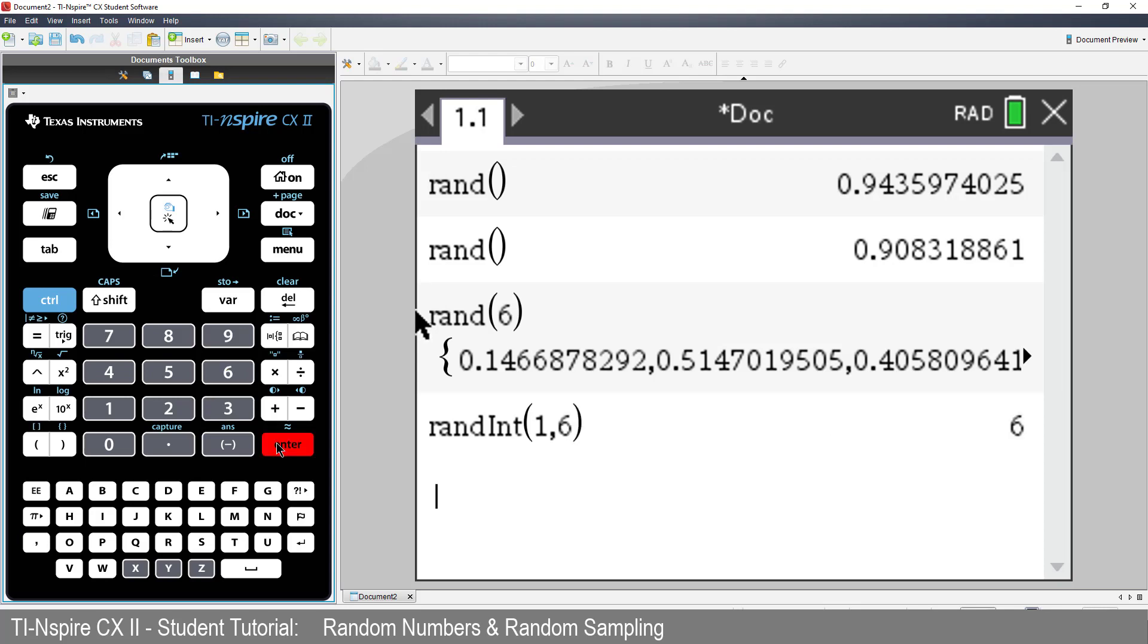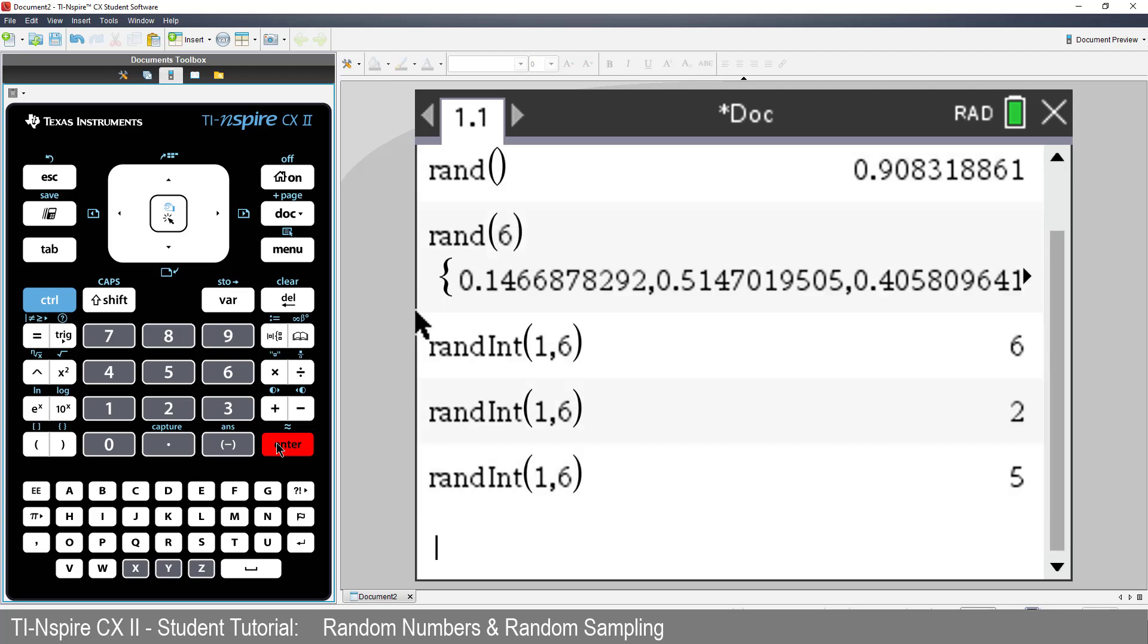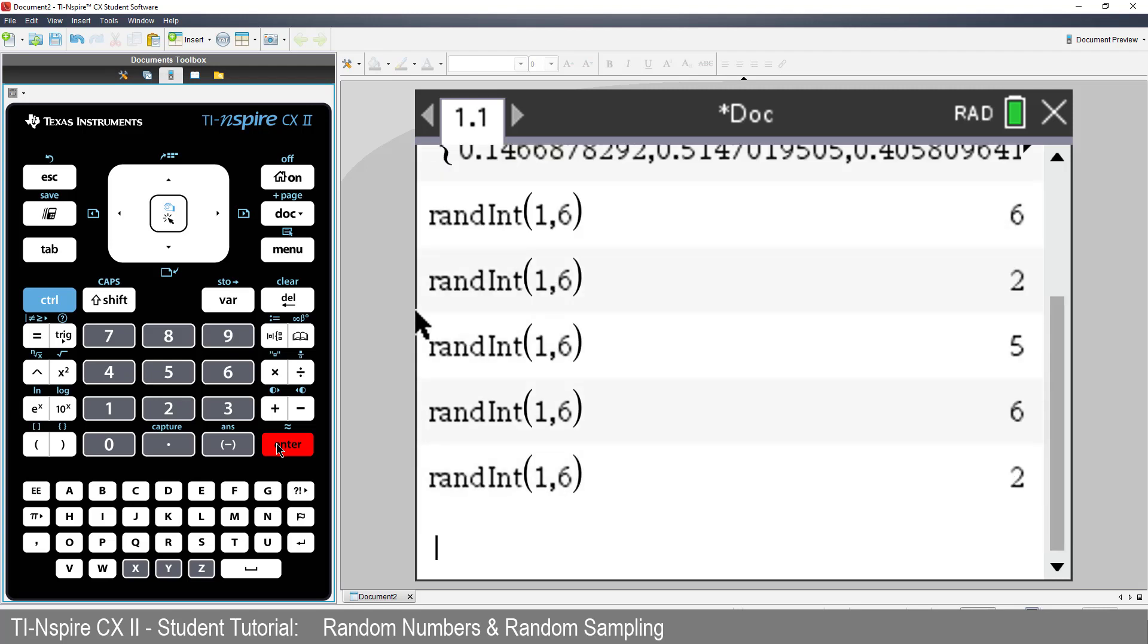And just like the previous command, if I want to generate some more, just keep pressing enter. Or, if I want to generate 50 dice rolls, just place a 50 in the command.